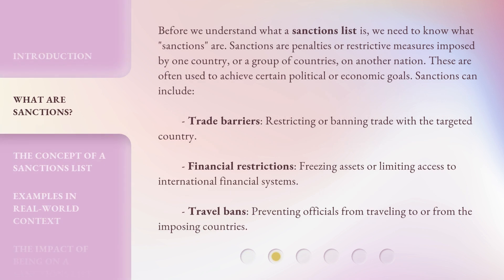Before we understand what a sanctions list is, we need to know what sanctions are. Sanctions are penalties or restrictive measures imposed by one country or a group of countries on another nation. These are often used to achieve certain political or economic goals. Sanctions can include trade barriers — restricting or banning trade with the targeted country — financial restrictions, freezing assets or limiting access to international financial systems, and travel bans, preventing officials from traveling to or from the imposing countries.